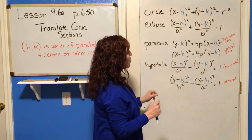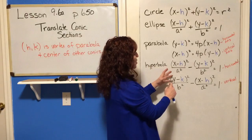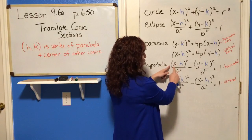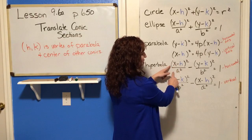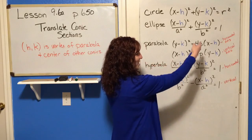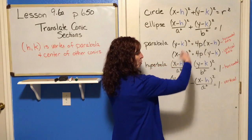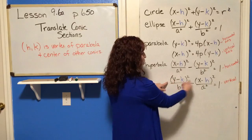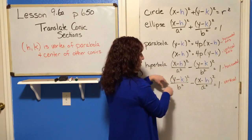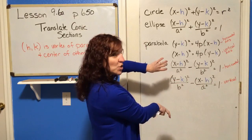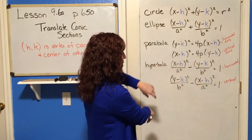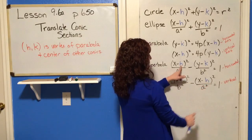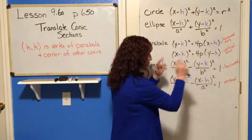On a hyperbola, same type of thing. If X is squared first, you've got a horizontal axis opening left and right. If Y is first, it's going to be a vertical axis opening up and down. H is always with the X.